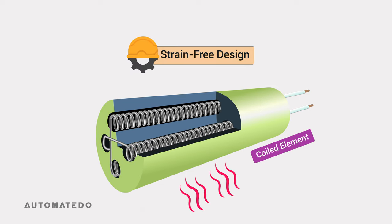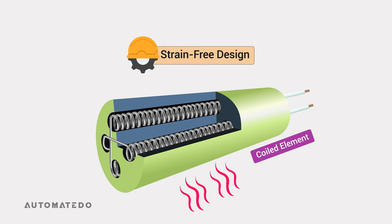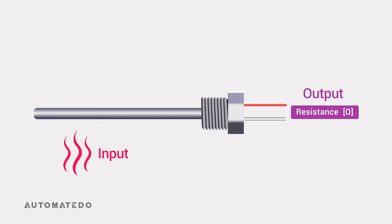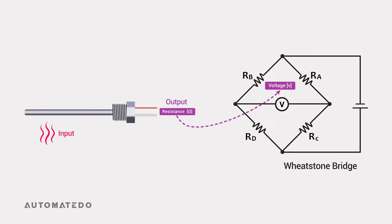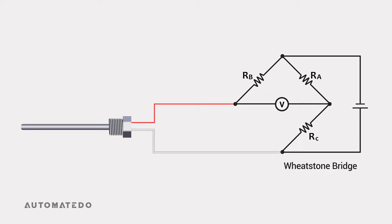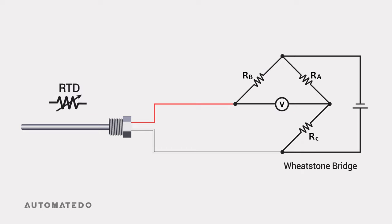This type of sensor has a strain-free design allowing the coil platinum wire to expand and contract freely as temperature changes, reducing errors due to mechanical strain. When the RTD sensor is exposed to a process temperature, it provides a resistance output in ohms, which cannot be sent to the control room since it's not a standard signal. So converting resistance to voltage is required using a particular circuit called Wheatstone bridge.